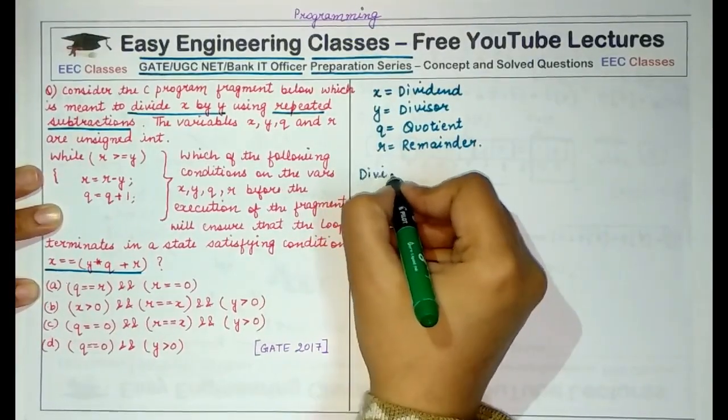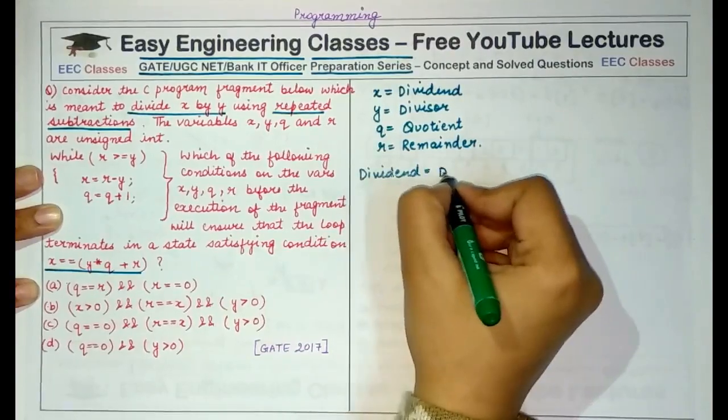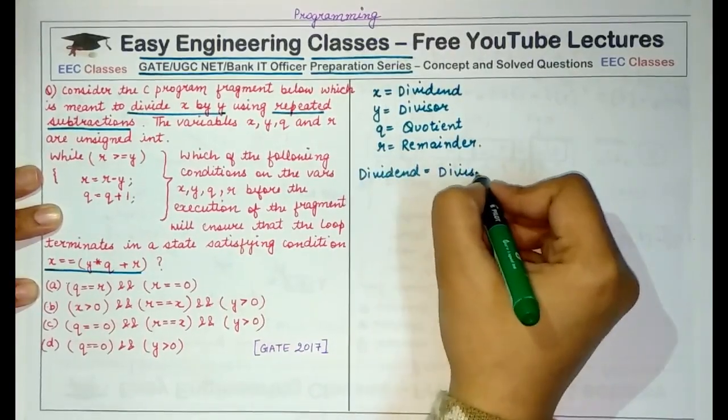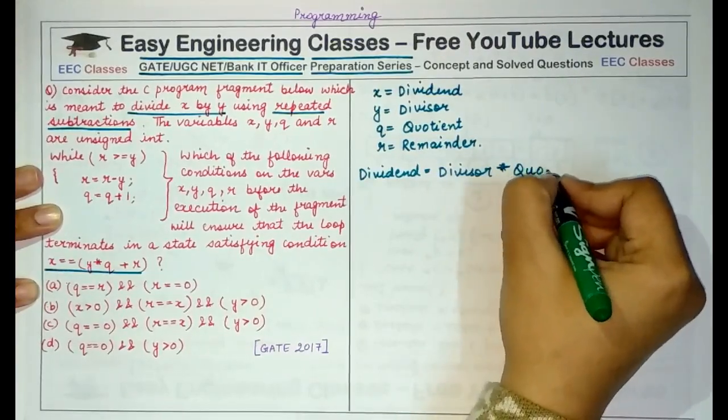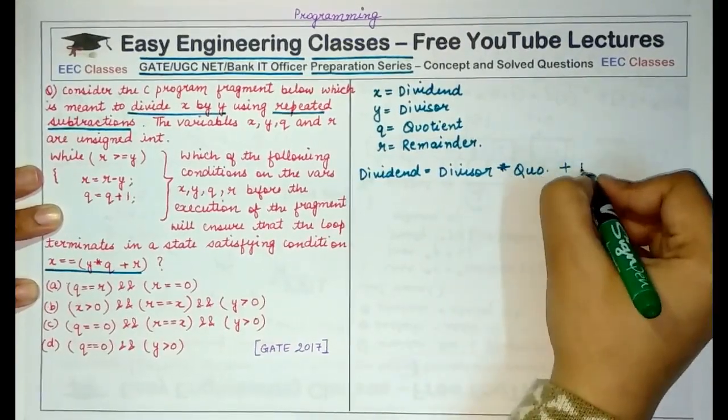The equation that holds between all of them is: dividend is equal to divisor into quotient plus remainder.